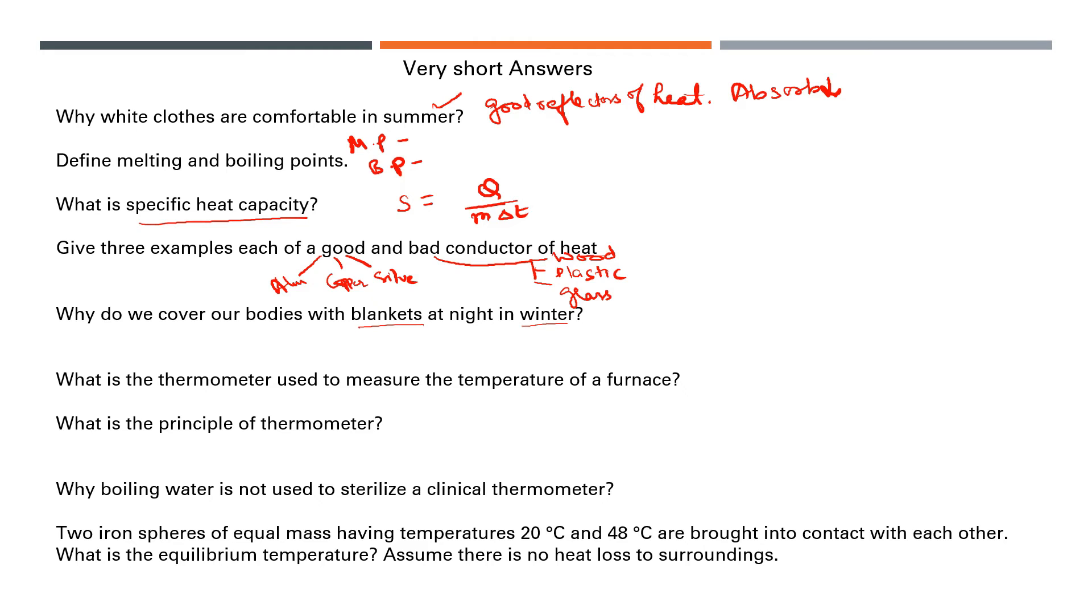Blankets do not allow heat to flow outward from our body because they have large amounts of trapped air inside. Trapped air behaves as a bad conductor of heat, so this is why we keep warm in winter. What is the thermometer used to measure temperature of a furnace? It is a pyrometer. What is the principle of thermometer? The principle of thermometer is the property of expansion on heating or cooling. Why is boiling water not used to sterilize a clinical thermometer?